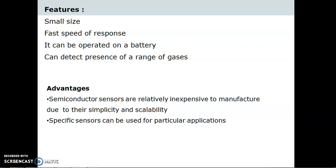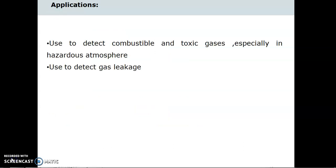For example, a sensor can be designed for low concentration applications whereas an alternative sensor can be designed for high concentration applications. The application of this sensor is to detect combustible and toxic gases, especially in hazardous atmospheres. Also, it is used to detect gas leakage. It has a wide range of applications such as refineries, industrial plants, paper pulp mills, wastewater facilities, and paint manufacturing plants.